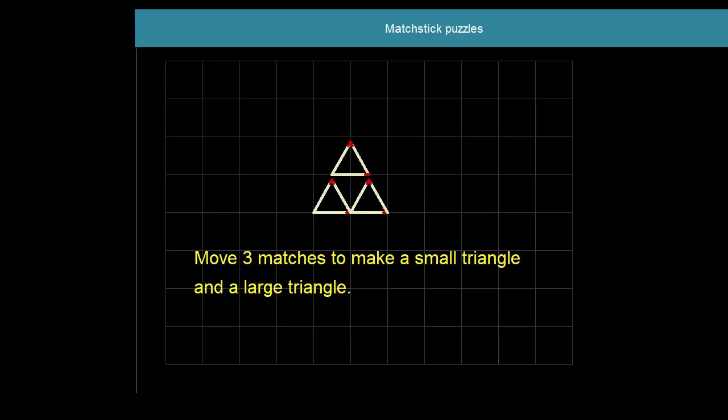Here it is. Pyramid shape made up of small triangles. Which three matches would you move so that you end up obtaining one large triangle and one smaller one? Which three matches?